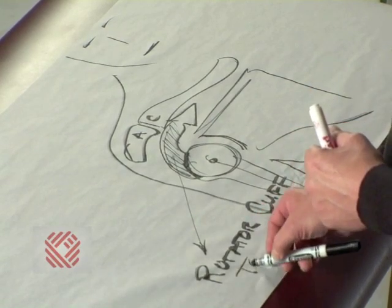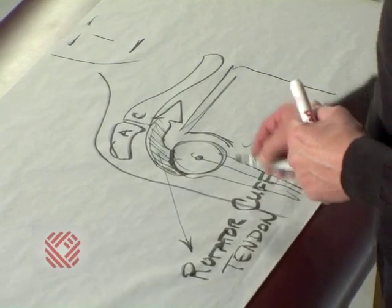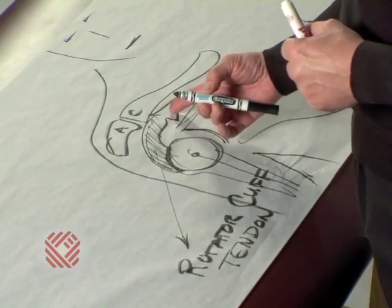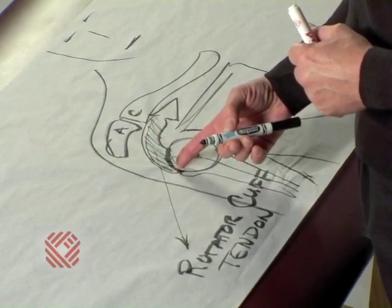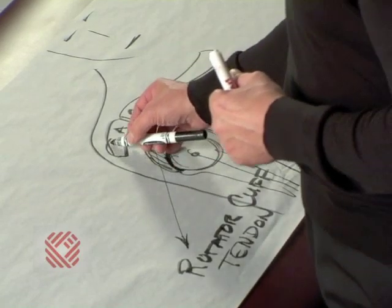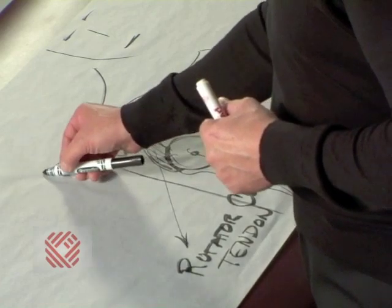And it's a tendon. A tendon is a rope-like structure that connects a muscle to the bone. Again, up above we have, sitting like a roof, two bones.